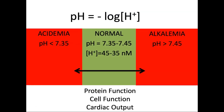As you remember from chemistry class, the pH is essentially the negative log of hydrogen ion concentration. What we're really talking about is the concentration of hydrogen ions in the blood. Normal is somewhere between 35 and 45 nanomoles per liter, and that corresponds to a pH between 7.35 and 7.45.